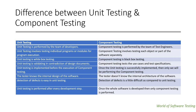In unit testing, the tester knows the internal design of the software because the tester is the developer — the developer knows each and every internal architecture or design of the software. Whereas in component testing, the tester doesn't know the internal architecture of the software, because the tester is the actual test engineer who is performing the QA activities.